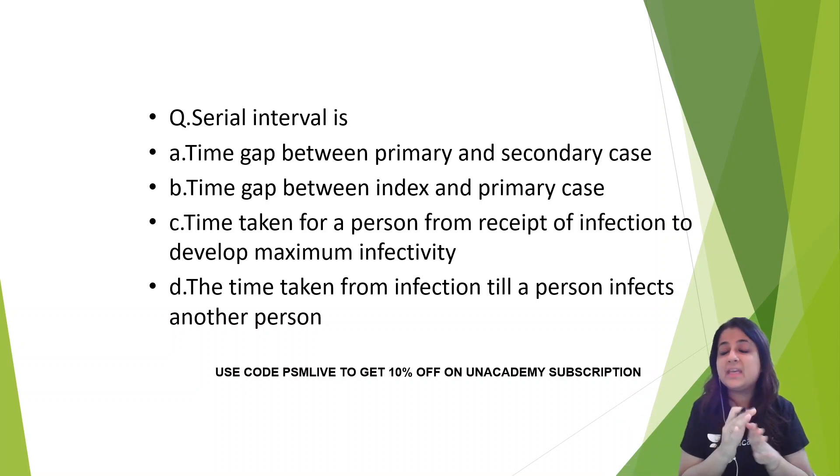The question that keeps coming is from the chapter of communicable disease. What is serial interval? Is it the gap between primary and secondary case? Is it between index and primary case? Is it time taken for a person from receipt of infection to develop maximum infectivity? Is it time taken from infection till a person infects another person? So what is serial interval?